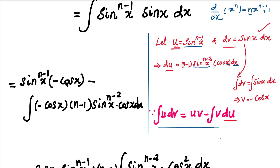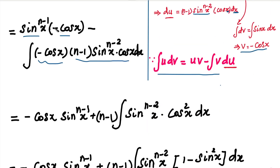So, on the right-hand side, we get uv minus the integral of v du. The first term is u into v, which equals sin^(n-1)(x) into minus cos(x). Then, minus the integral of v into du. If there is a minus symbol, the remaining term we have is cos(x) into sin^(n-1)(x) in the second term.